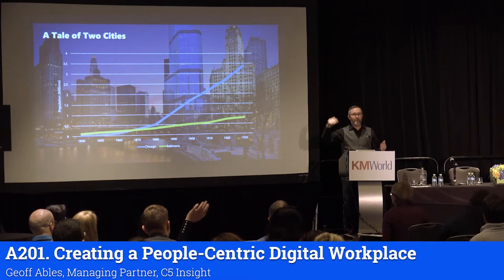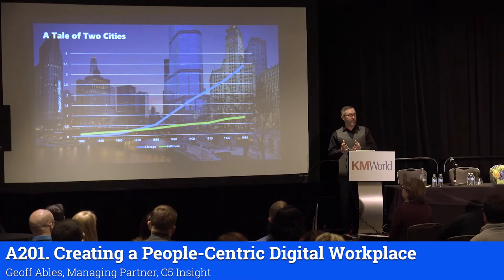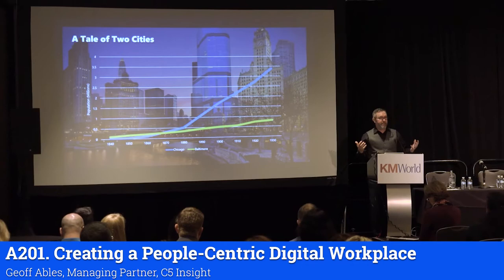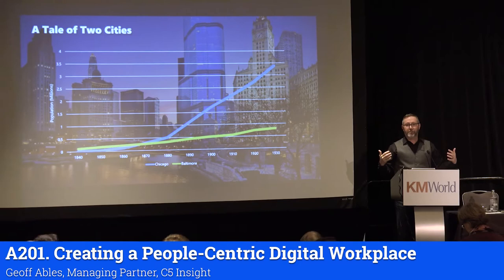Baltimore, Maryland was the second largest city in the United States of America at that time — a shining future city, sitting as a port city in 1840 in a country with a bright future ahead of it and lots of expansion going on. Baltimore thought its course was set.